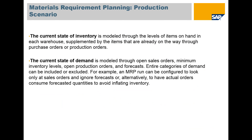True requirements planning production scenario: the current state of the inventory is modeled through the levels of items on hand in each warehouse, supplemented by items that are already on the way through purchase orders or production orders. The current state of demand is modeled through open sales orders, minimum inventory levels, open production orders, and forecasts.